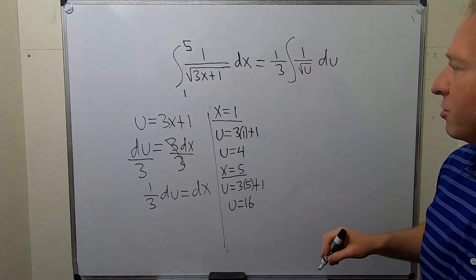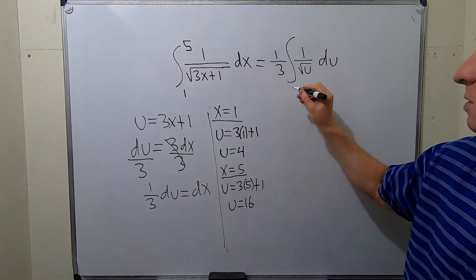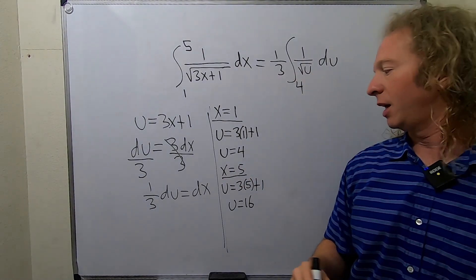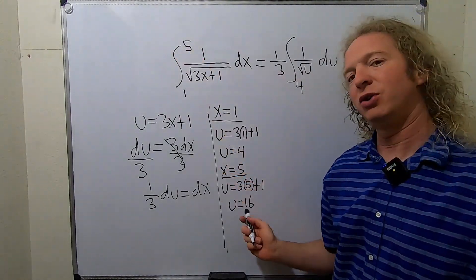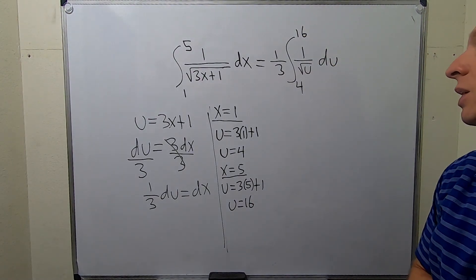And then our limits are now u values. Let's see, when x is 1, u is equal to 4, so this becomes a 4. And when x is 5, u is 16, so this becomes a 16. Really, really, really nice.